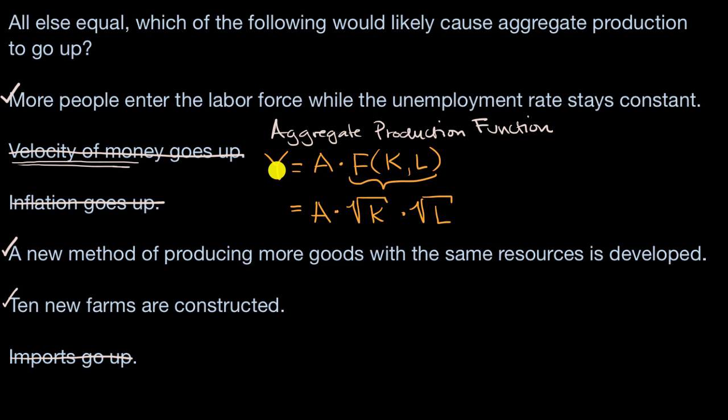The reason why you might see square roots or fractional exponents on capital or labor is this idea of diminishing marginal returns. That first farm might really add a lot to your output, but maybe that millionth farm might still add to your output, but maybe at a less level, at a lower level.